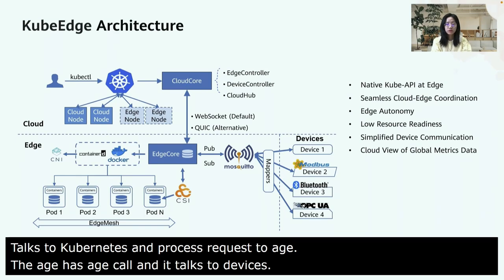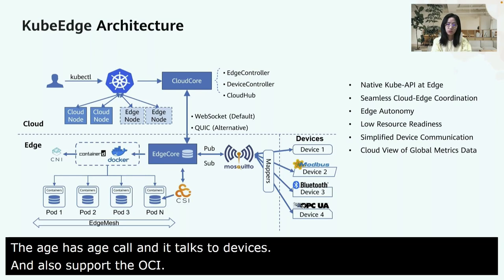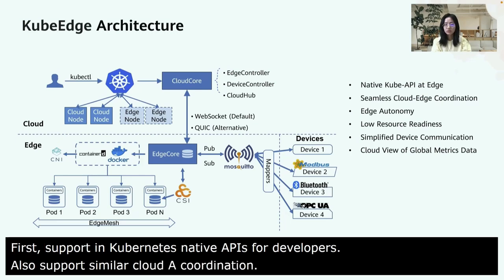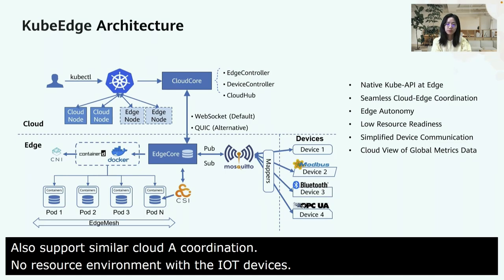Key features of KubeEdge include support for Kubernetes native APIs for developers, seamless cloud edge coordination, edge autonomy, and low resource environments. For IoT devices, KubeEdge provides a device mapper to simplify integration with different device protocols. We also provide a cloud view of global metrics from the data.